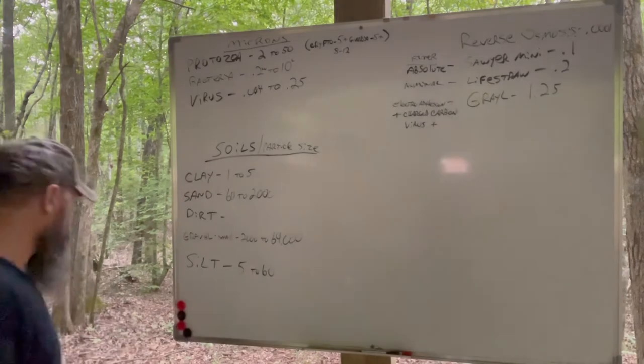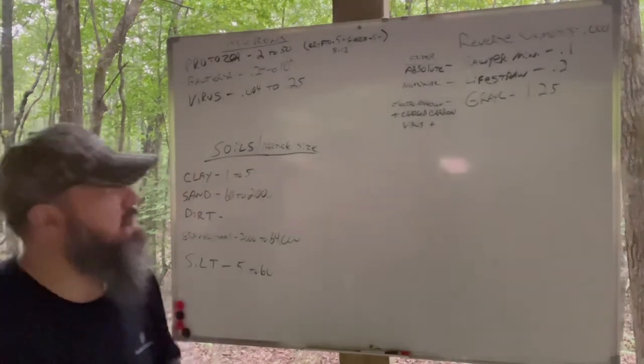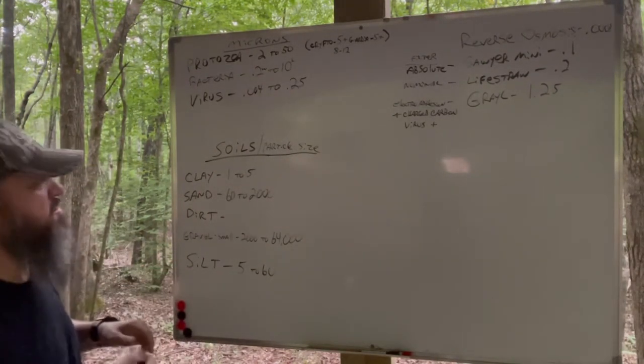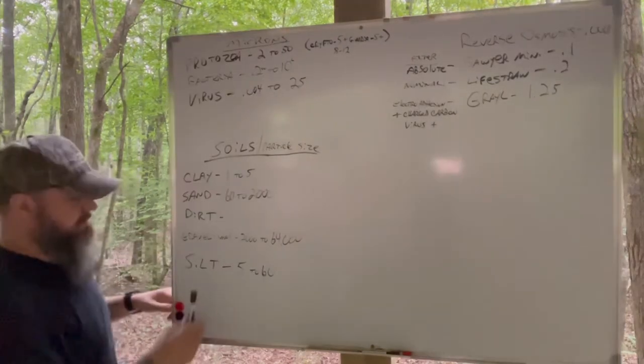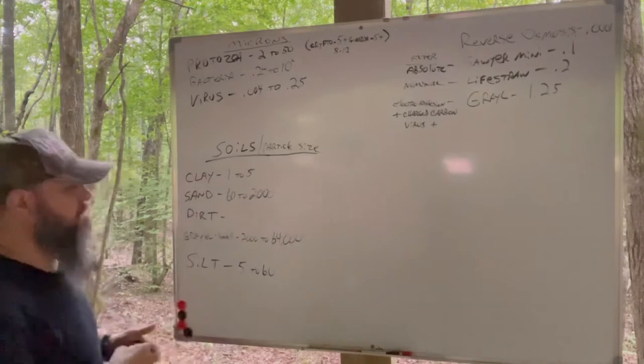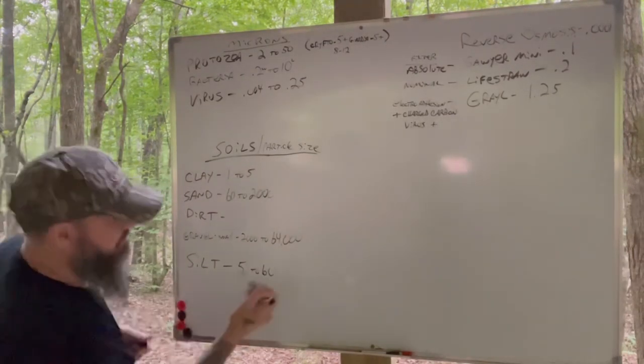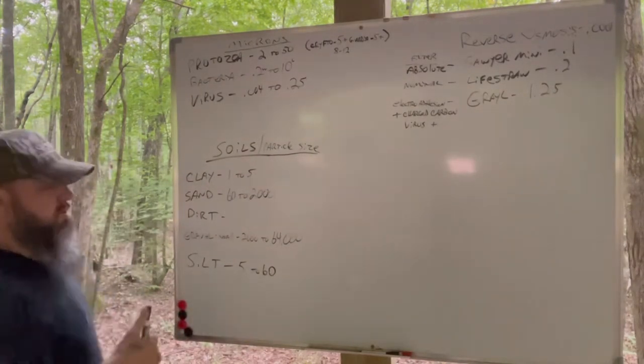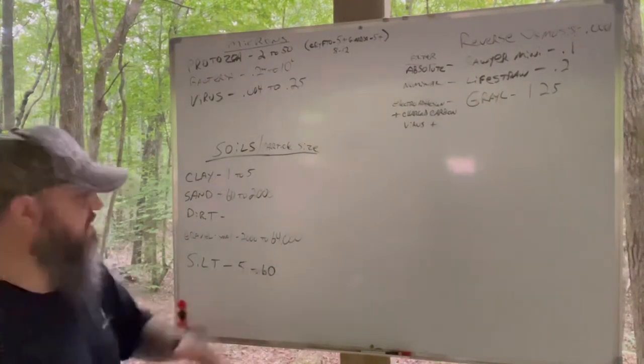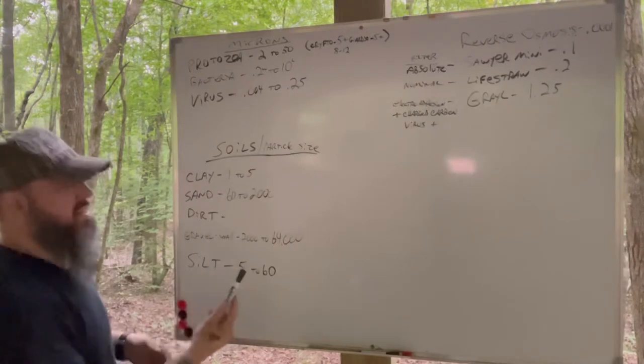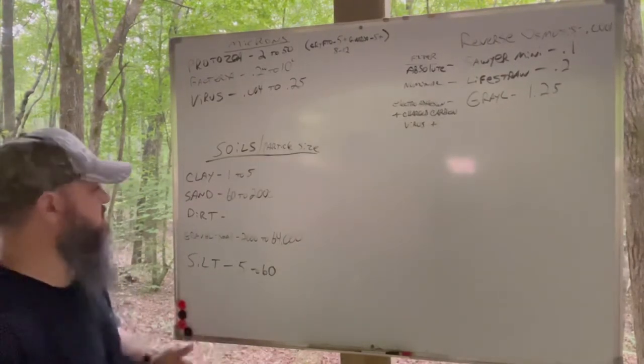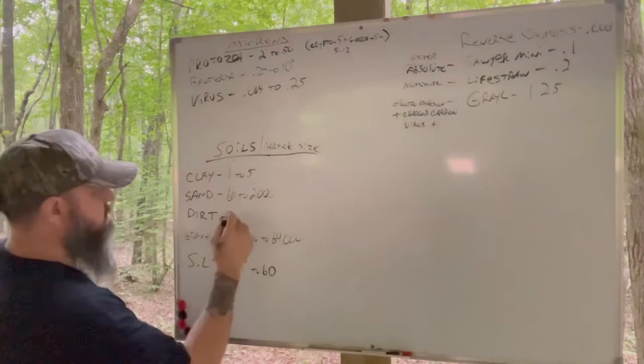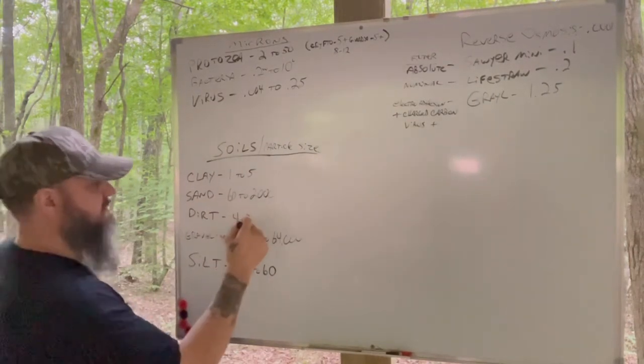To have a coyote well or a seep well, obviously you don't have these. So let's talk about the soils and the particle size of these soils. Silt is a mixture of clay and sand. It can range from 5 microns in size up to about 60. Gravel's huge, man. Even small gravel pebbles, you're going to be looking at 2,000 microns to 64,000 microns. Absolutely useless for filtering. Dirt—you can split the difference on that stuff. It's still going to be larger than 4 or 5 microns all day long.